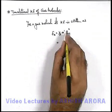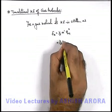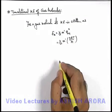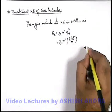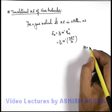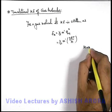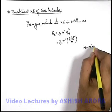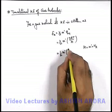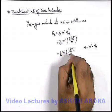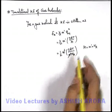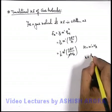If we substitute the value of the RMS velocity, we get one half m' times three RT divided by M. We know that the molar mass M can be written as the mass of one mole of gas molecules, that is m' multiplied by Avogadro's number. Substituting this, the m' cancels out, and R divided by Avogadro's number is the Boltzmann constant k.